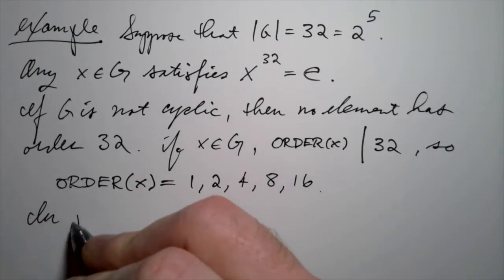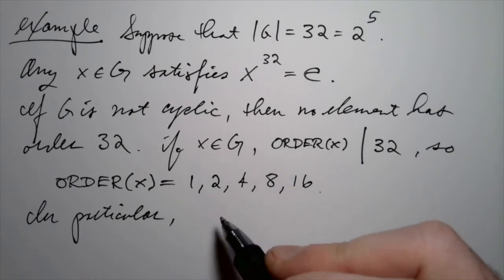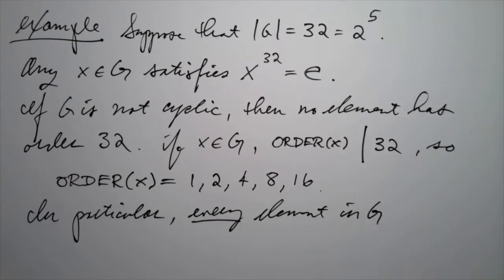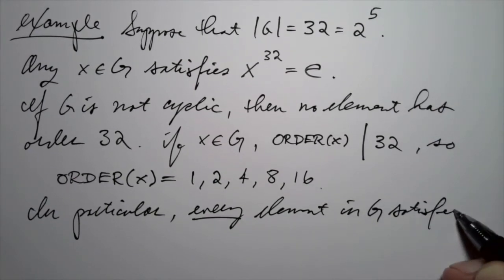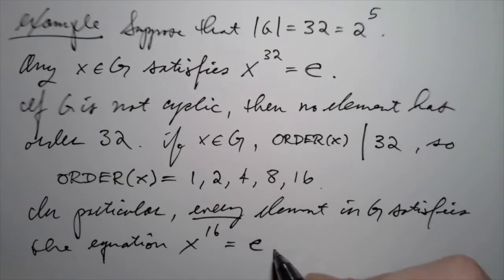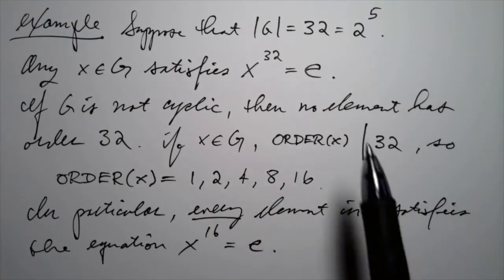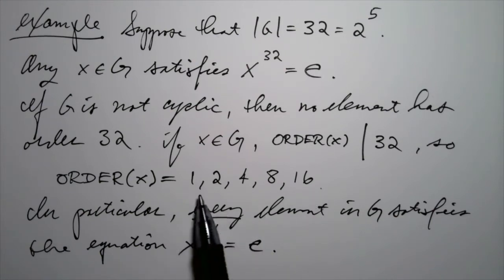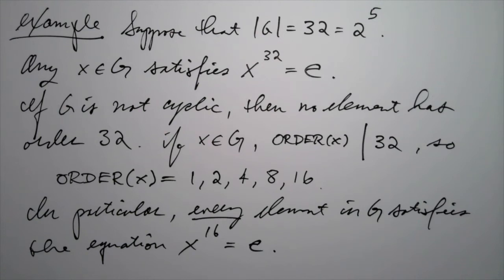In particular — this might not seem obvious at first, but it's a consequence — every element in G, if it's not a cyclic group, satisfies X to the 16 equals the identity. We said before that X to the 32 equals the identity always holds in this group. But under the additional information that G is not cyclic, since all element orders must be 1, 2, 4, 8, or 16 — all of which are divisors of 16 — every element raised to the 16th power is the identity.